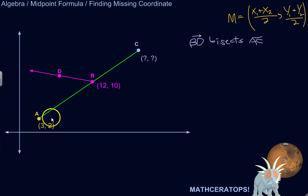Alright, so I've got a line segment here, AC, and the ray BD bisects it, which means that B must be the midpoint of AC.